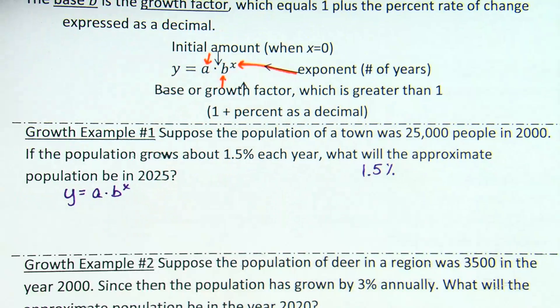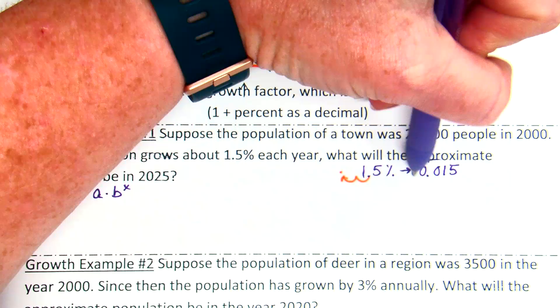And so we're going to use 0.015. Remember, any time we move a percent to a decimal, we move two left. So we're going to use that 0.015. And that's one of the pieces of information that's going to go as part of our growth.